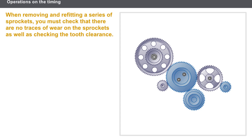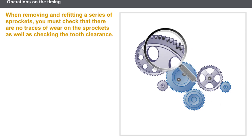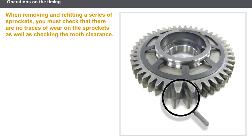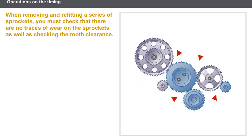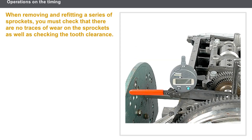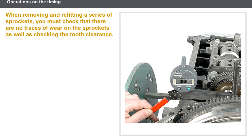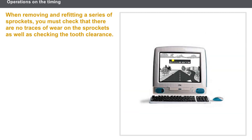Lastly, let's look at the specific operations relating to removal and refitting a series of sprockets and a balancer shaft. When refitting, it is essential to carry out the following operations: check that there are no traces of wear on any of the sprockets before refitting them, check the alignment of the teeth on the free play adjusting sprocket, and check the tooth clearance for all of the sprockets. When refitting the balancer shaft, the balancer shaft timing must be checked. The tooth clearance for the balancer shaft sprockets and the crankshaft toothed wheel must also be checked using a special tool. You must refer to the technical documentation to find out about the special procedures involved.